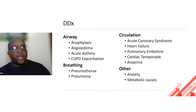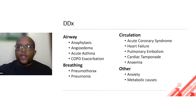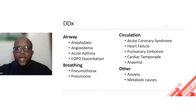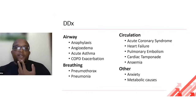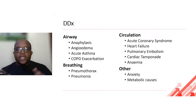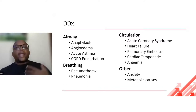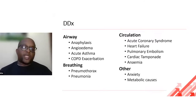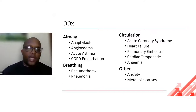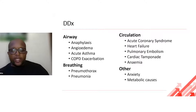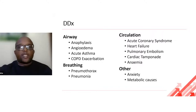Then consider whether it's a breathing problem — looking at the lungs themselves: pneumothorax or pneumonia can present with shortness of breath. From a circulation perspective, look at acute coronary syndromes, heart failure, pulmonary embolism, and cardiac tamponade — everything around the heart and the big blood vessels. Anemia can also make a patient present with shortness of breath. Other causes include anxiety and metabolic disorders.